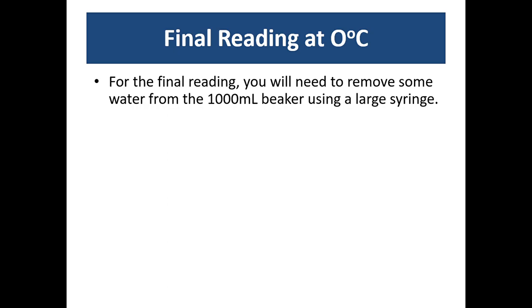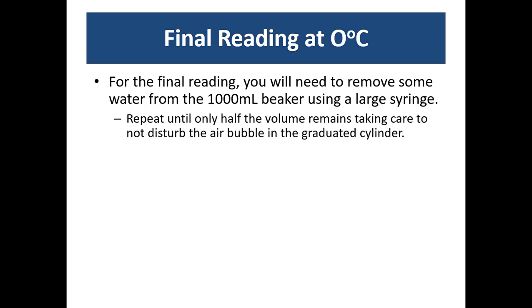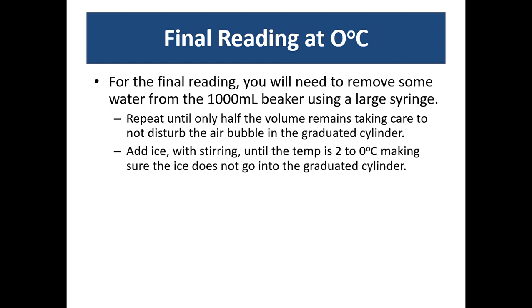For the final reading what you're going to do is take a reading of the volume of the air bubble at zero degrees Celsius. So you'll need to remove a lot of the water from the beaker. We'll use a large syringe with a rubber attachment to it. You may have to repeat several times until you have about half the volume of water left. Now make sure you don't disturb the air bubble in the graduate cylinder. Okay now very carefully with the stirrer on we're going to add ice until the temperature is about zero to two degrees Celsius. Make sure the ice doesn't go inside the graduate cylinder. Remember ice has a different specific heat than liquid water and you might affect the way heat is being transferred in the process.